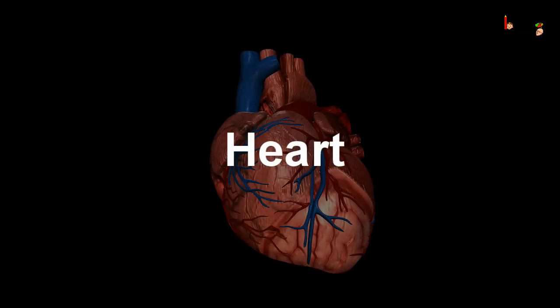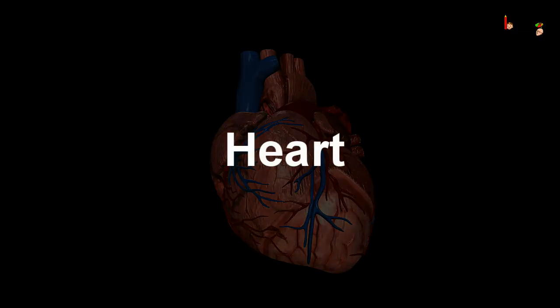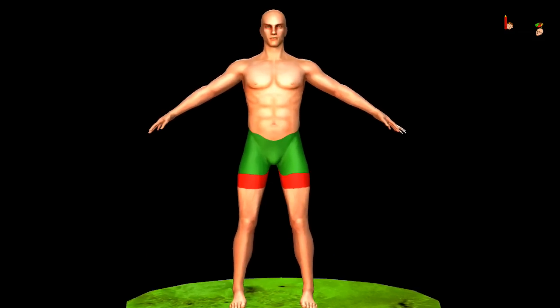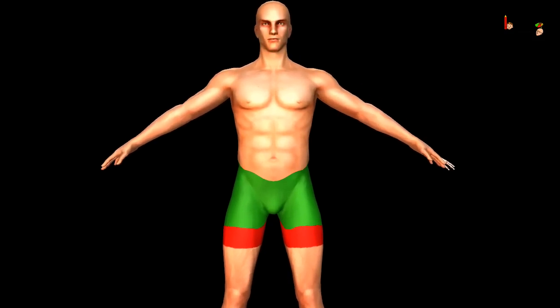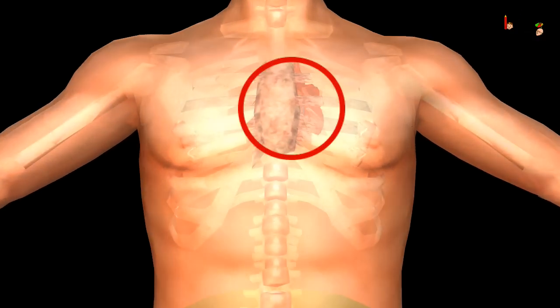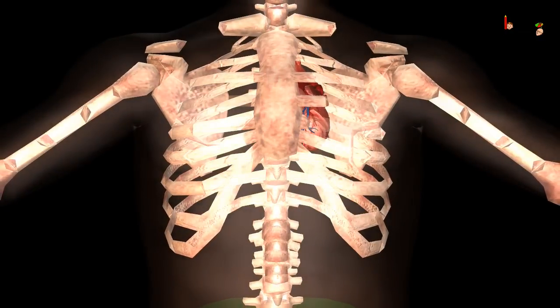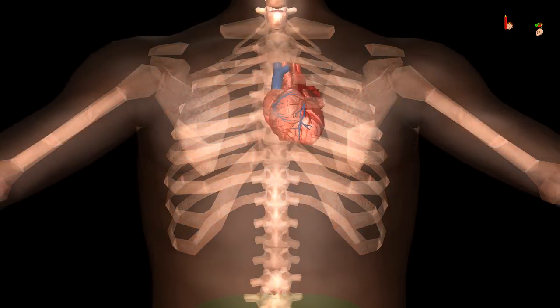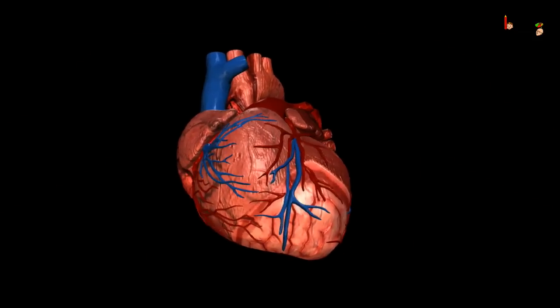Good morning children. Today we shall learn about the heart. A heart is a muscular organ which is located in the chest cavity, slightly towards the left, and it is protected by the rib cage. The size of the heart is not too big.